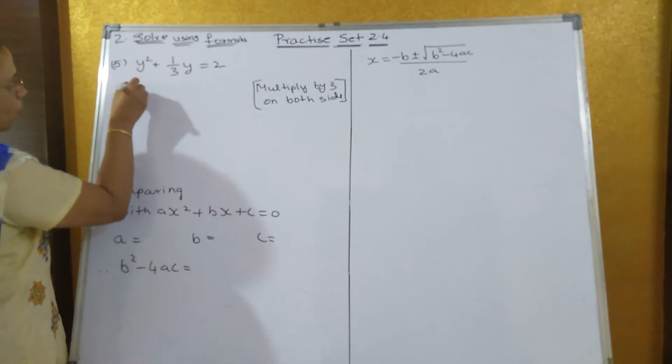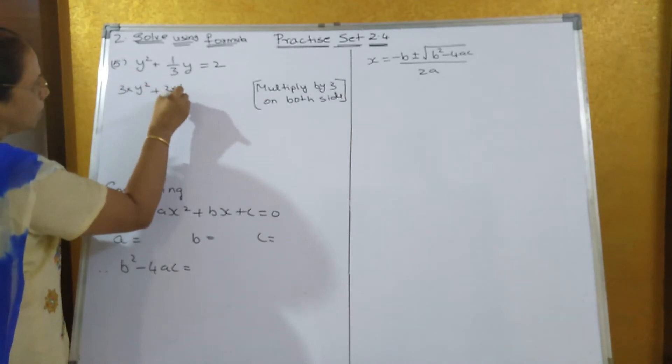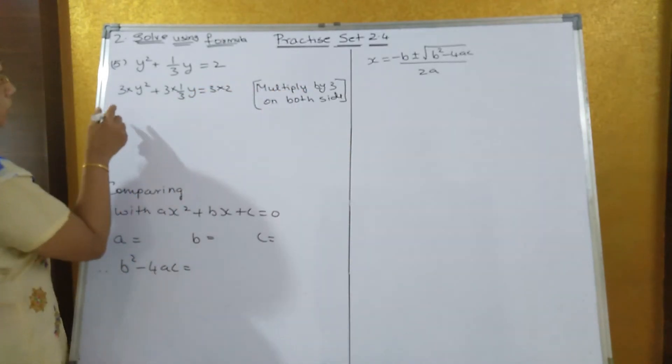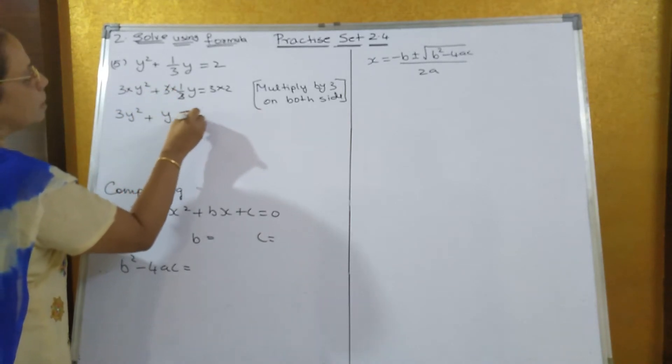3 × y² + 3 × 1/(3y) = 3 × 2. Multiplying by 3 on both the sides, what you will get? 3y² plus this 3 and 3 will get cancel, y = 6.